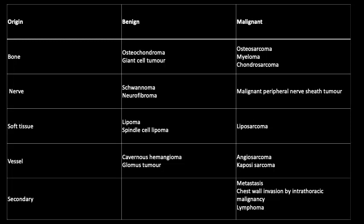These are the primary tumors. The secondary tumors that can be seen in the chest wall include metastasis, chest wall invasion by intrathoracic malignancy, and lymphoma.